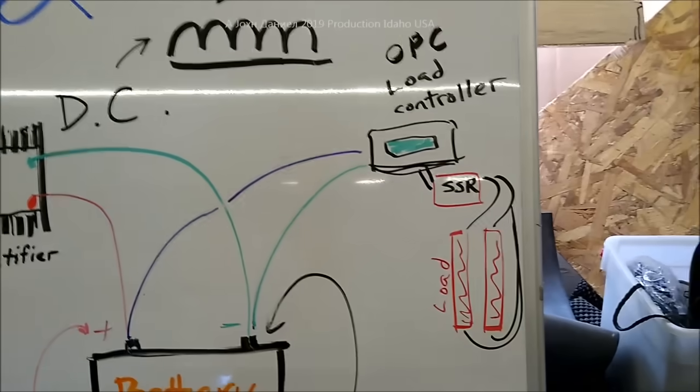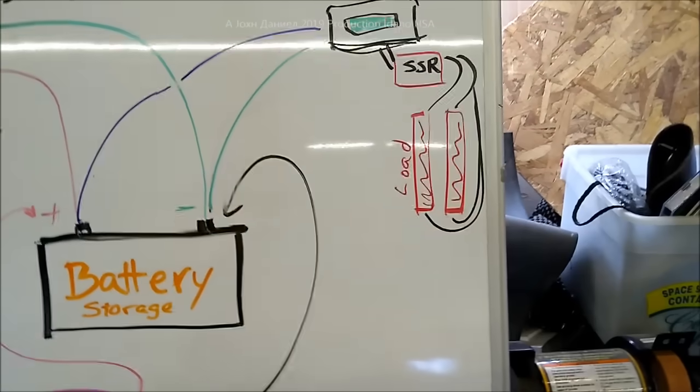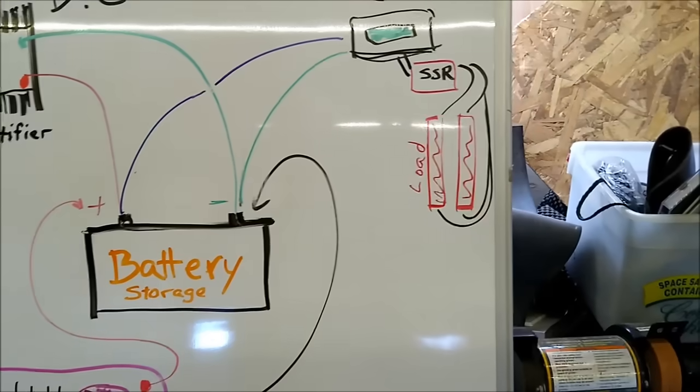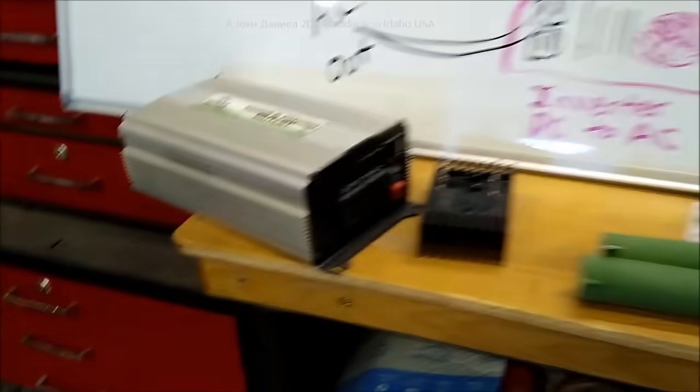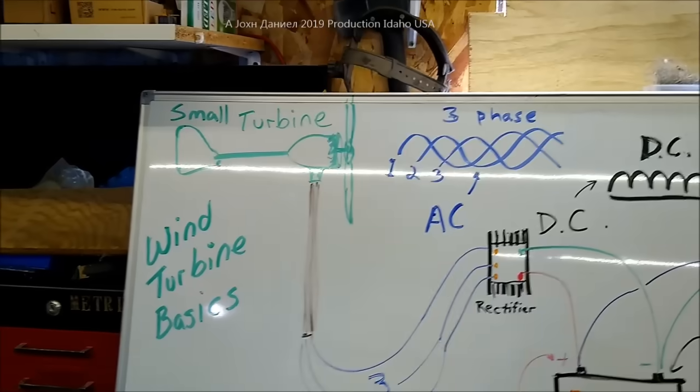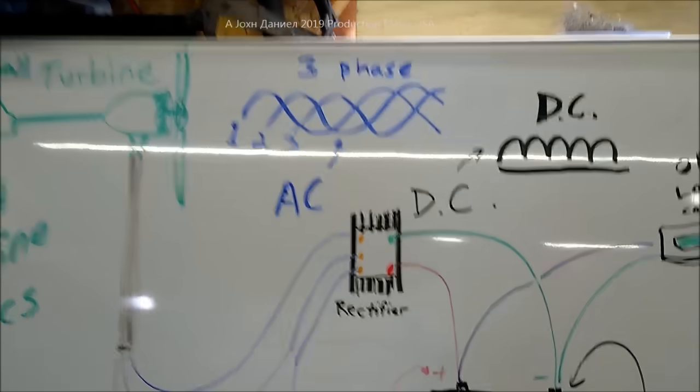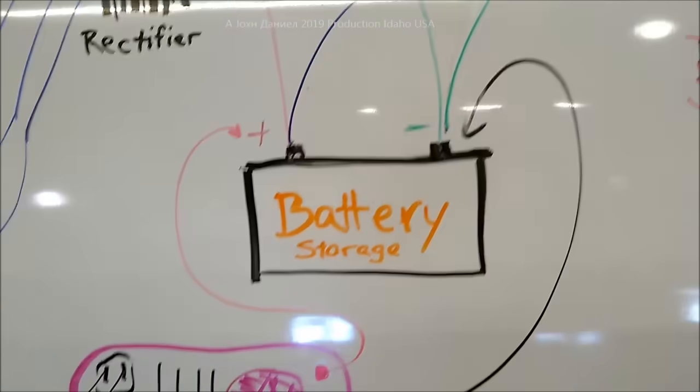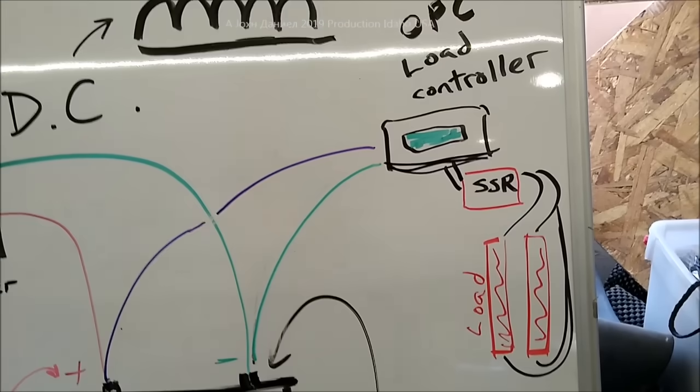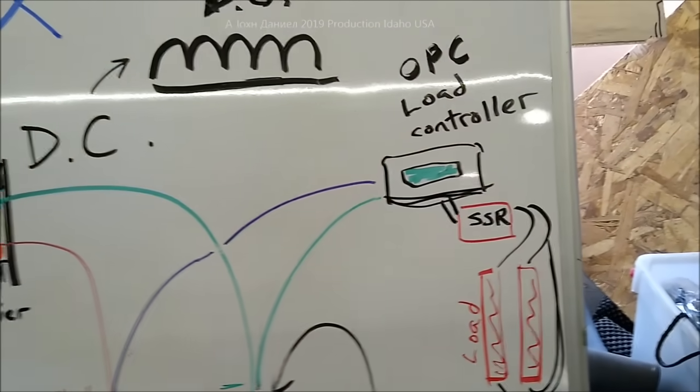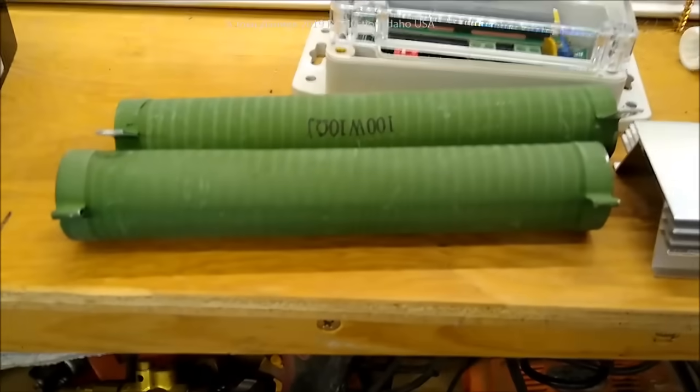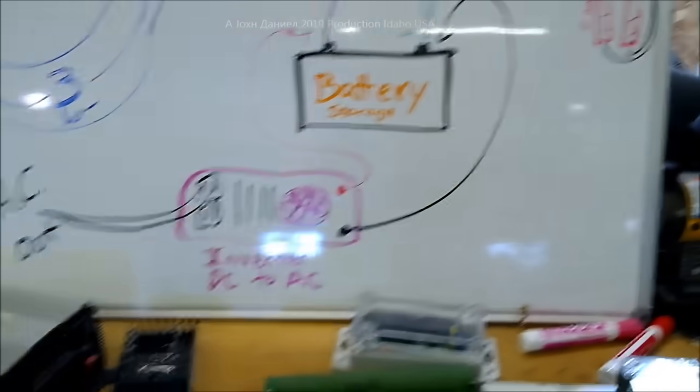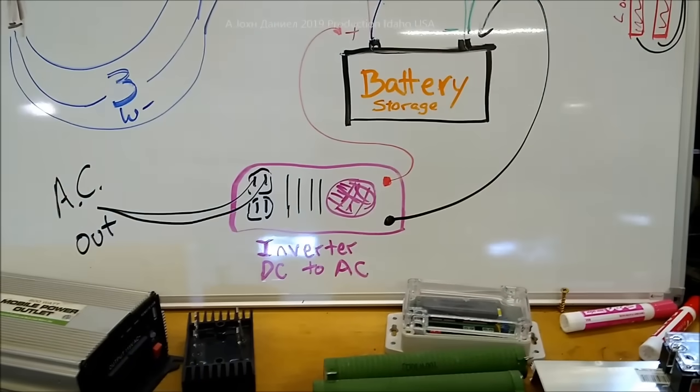So over here you have your storage battery and your controller. The controller just takes and senses power, then it runs an SSR. The SSR dumps the load through wiring to the resistors. Over here you have the battery going to a power inverter. That's how you take a wind turbine, produce three phase, convert to DC, charge a battery, have a controller that diverts anything above what the battery can handle into load resistors, and from there off your battery you utilize the energy to make AC power.